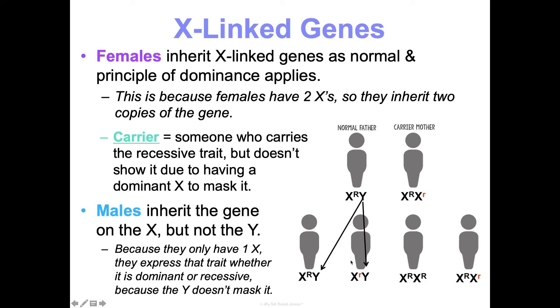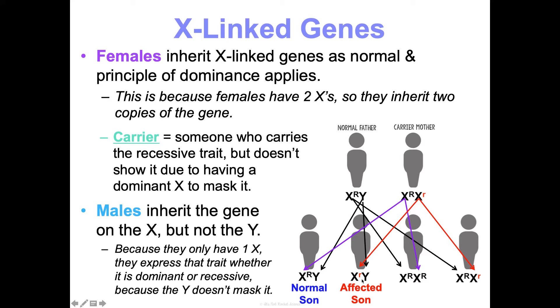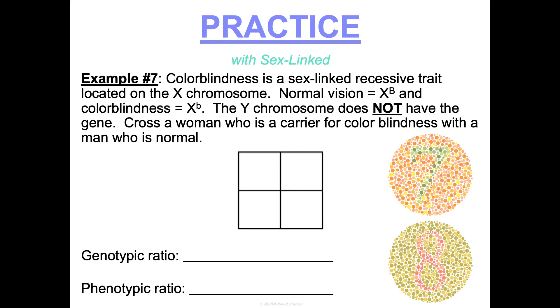In a Punnett square: dad gives his Y to half his children and his normal X to the other half; mom gives each of her X chromosomes to half. The result: 25% normal sons, 25% affected sons (who got the hemophilia X from mom), 25% normal daughters, and 25% normal carrier daughters. This shows why recessive X-linked disorders are much more common in males. Color blindness is another example — you'll practice Punnett squares for these, and we'll go over them together.